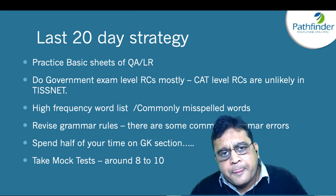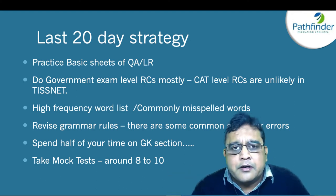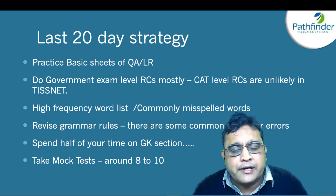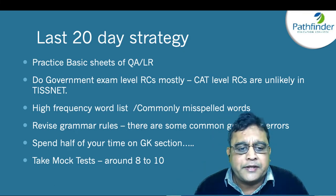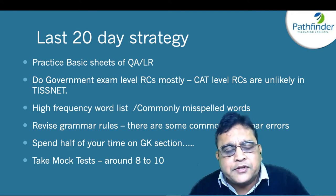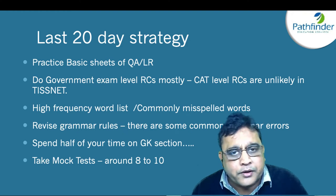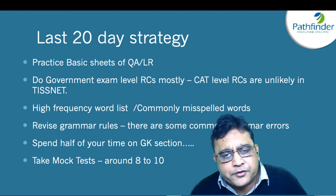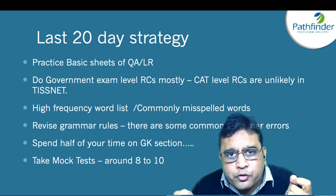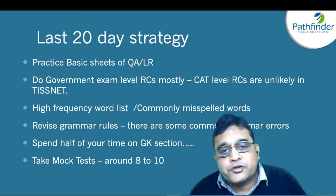For reading comprehension, try to solve 3 to 4 comprehension passages daily at government exam level — around 300 words, not as tough as CAT level. The level of TISS RCs is much lower than CAT, so government exam level RCs will suffice. Also look at high-frequency word lists; if you haven't done any word lists before, target 1,000 words. You can easily learn 1,000 words in one month by spending around an hour every day. Make sure you look at commonly misspelled words, as those questions are easy if you know them and won't take long to answer correctly.